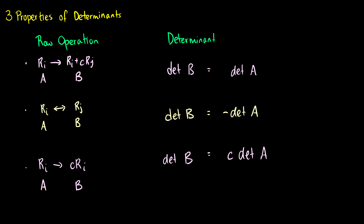If we take row i of matrix A and add a multiple of another row to it, giving us a new matrix B, then the determinants of the two matrices are equal.